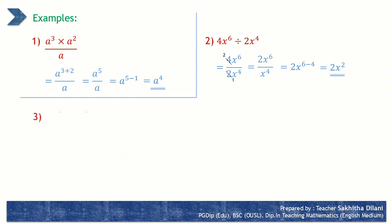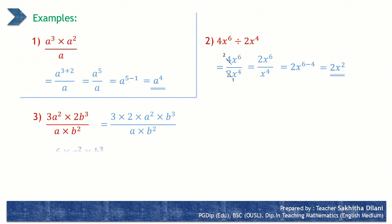The third example: 3 a squared into 2 b cubed over a into b squared. Writing it by expanding: 3 into 2 into a squared into b cubed over a into b squared. The product of 3 and 2 is 6, so we have 6 into a to the power 2 into b to the power 3 over a into b squared. Applying the division law of indices: 6 a to the power 2 minus 1 into b to the power 3 minus 2. After simplifying, this gives 6 a to the power 1, b to the power 1. Since the indices are 1, it is simply written as 6 a b.